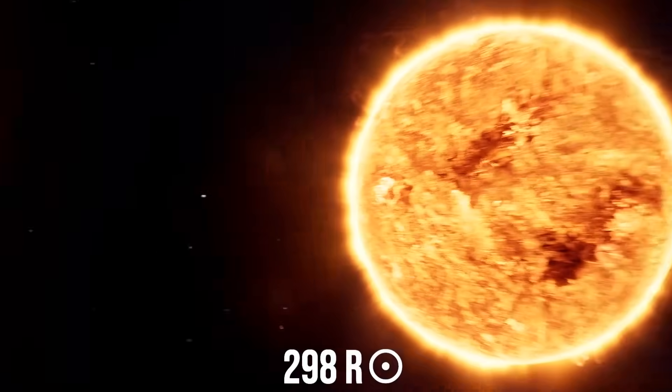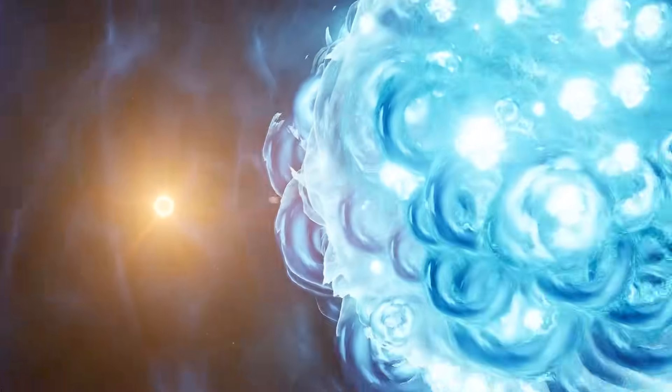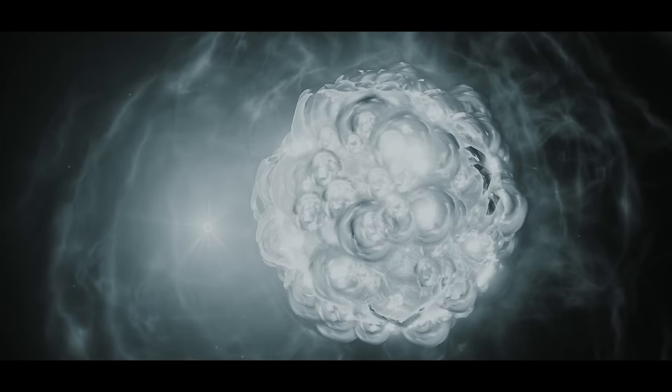They discovered that the scorching plasma on R Doradus is literally boiling, forming giant bubbles. Since the star's radius measures nearly 300 times our Sun's radius, the bubbles on its surface could be as large as our star.